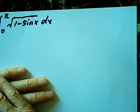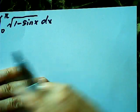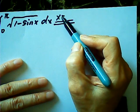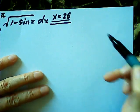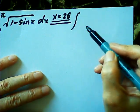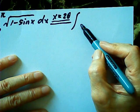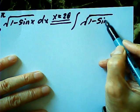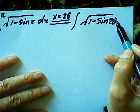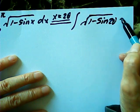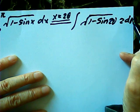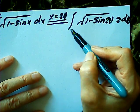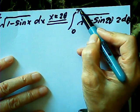For this integral, I start with a substitution: let x be 2θ. Then this becomes an integral of (1 - sin 2θ) times 2 dθ, and the boundary will change from 0 to π/2.